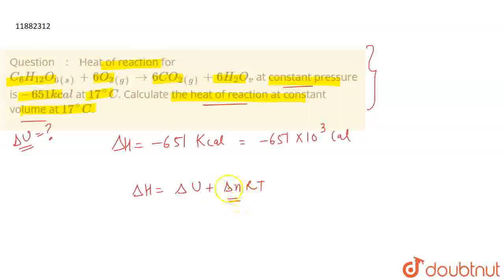Delta N is the change in the number of gaseous moles of product minus the number of gaseous moles of reactants. So we have the temperature here.